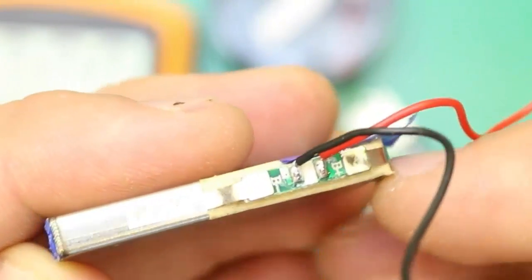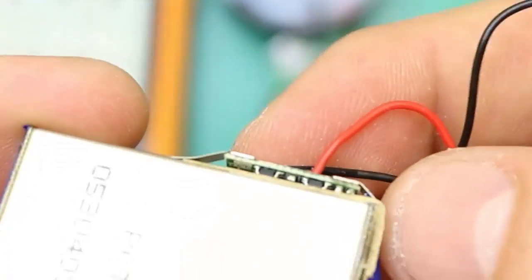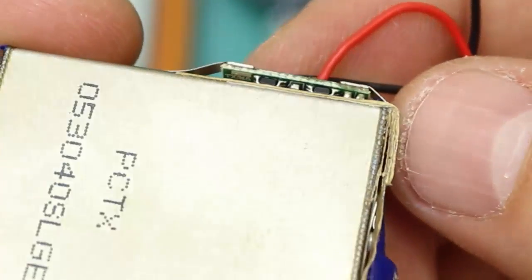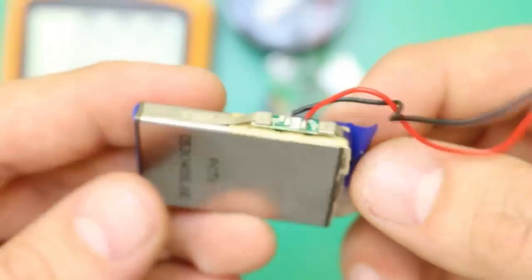This is the charger protection board. It limits the battery discharge and charge, because li-poly or li-ion batteries, if they are fully discharged or loaded above their value, may deteriorate or even explode.